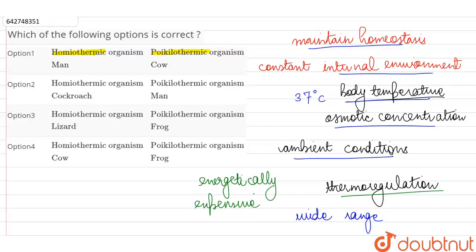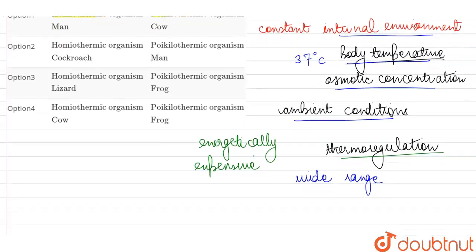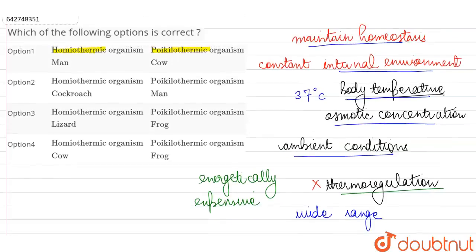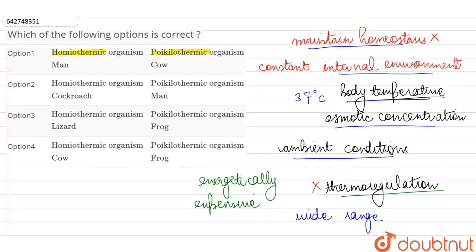So, we will see that if we talk about our animal world, in most of the plants, this is not seen. Almost all plants will be incapable of any kind of thermoregulation or any kind of homeostasis.